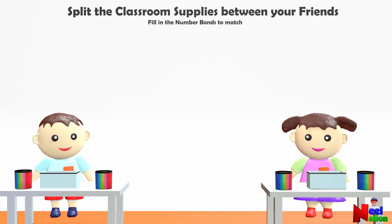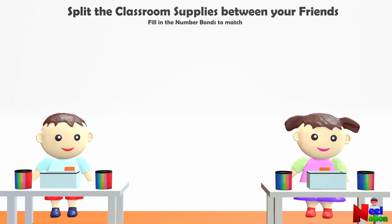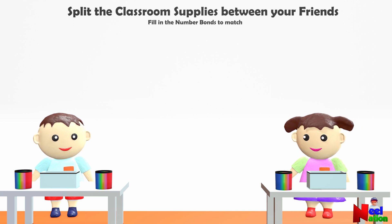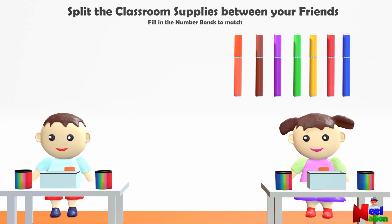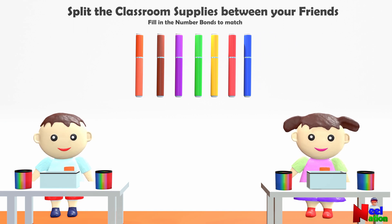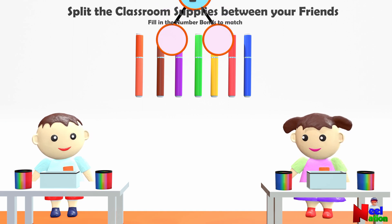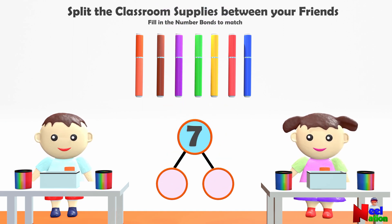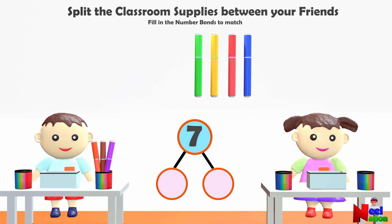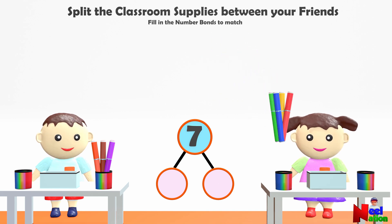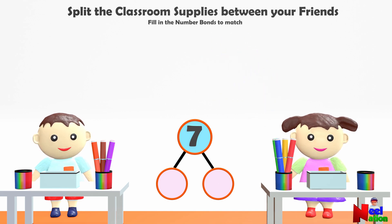Let's continue our decomposing game by distributing some classroom supplies to two friends — Lincoln and Tracy. Can you distribute the classroom supplies between them and fill in the number bonds to match? Let's begin by distributing seven markers. Can you give some to Lincoln and some to Tracy? I give three markers to Lincoln and four to Tracy. Can you fill the number bonds? So we decomposed seven into three and four.